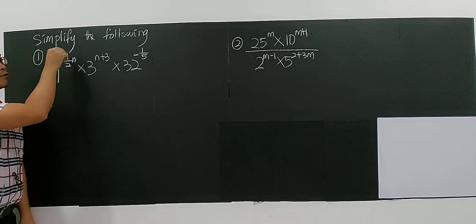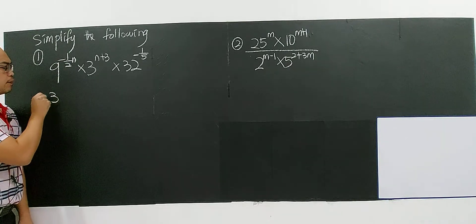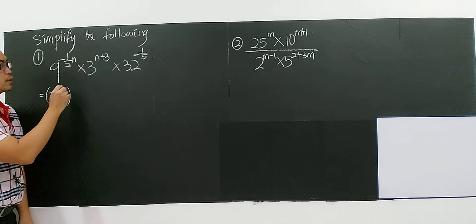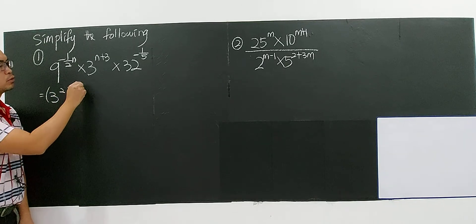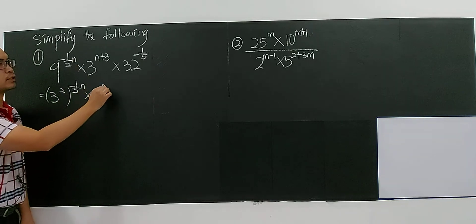So now you have 9 to the power of negative 1 over 2 and you must know that 9 can convert to become 3 to the power of 2. This is what you must know. And right, so 3, you can modify because 3 already the smallest base.